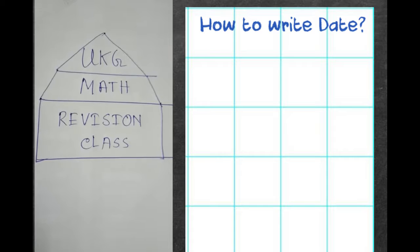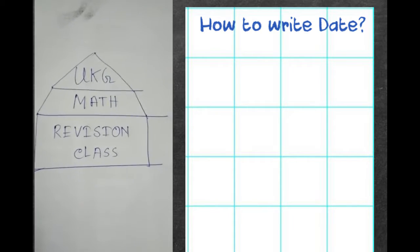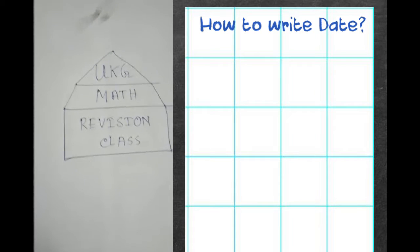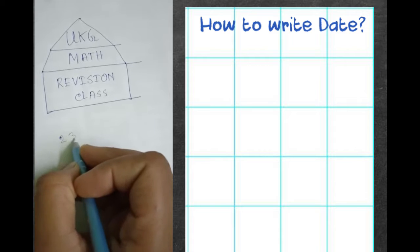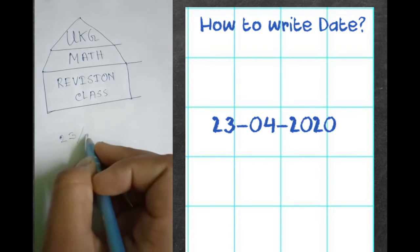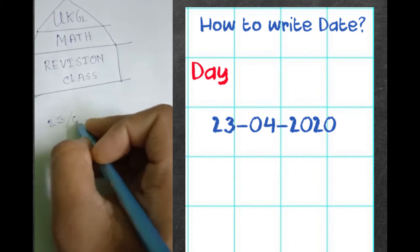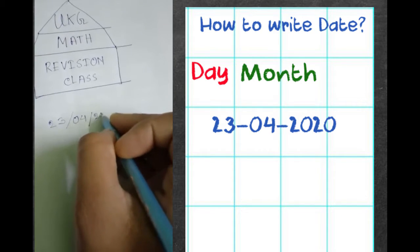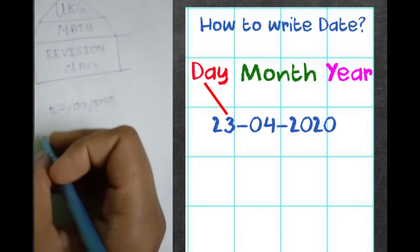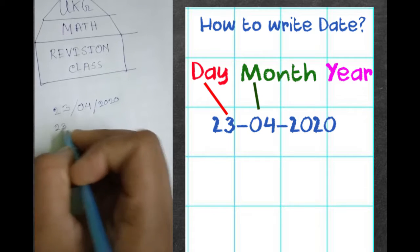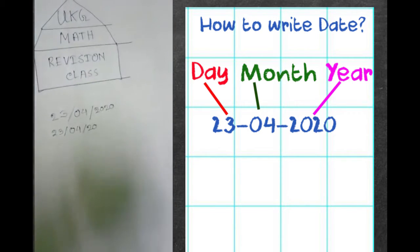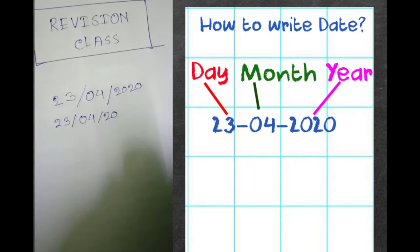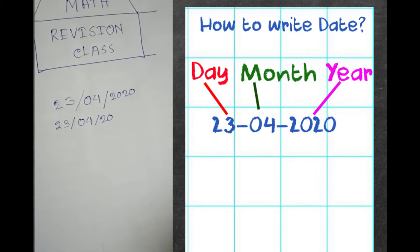Do you remember how to write the date? Okay, I'll tell you. That is 23rd April of the year 2020. In short, 23-04-2020, just the last two digits of the year. Okay, so let's start.